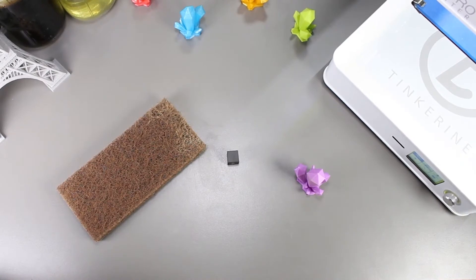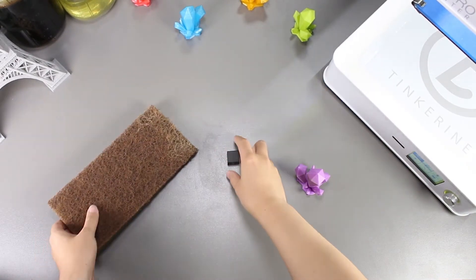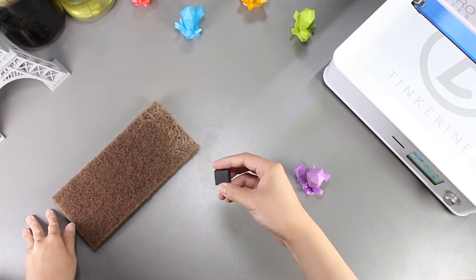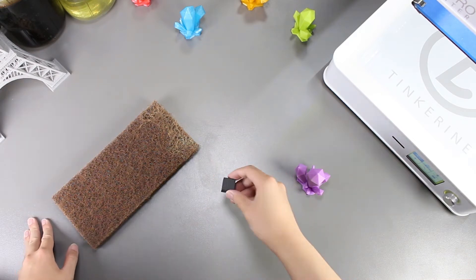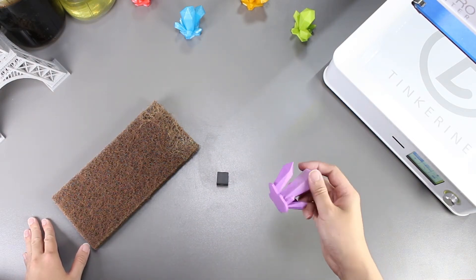Well there we have it. We post-processed our PLA prints with a scouring pad and it looks like it works pretty well. It does take a bit of time and effort to get it smooth but it works.